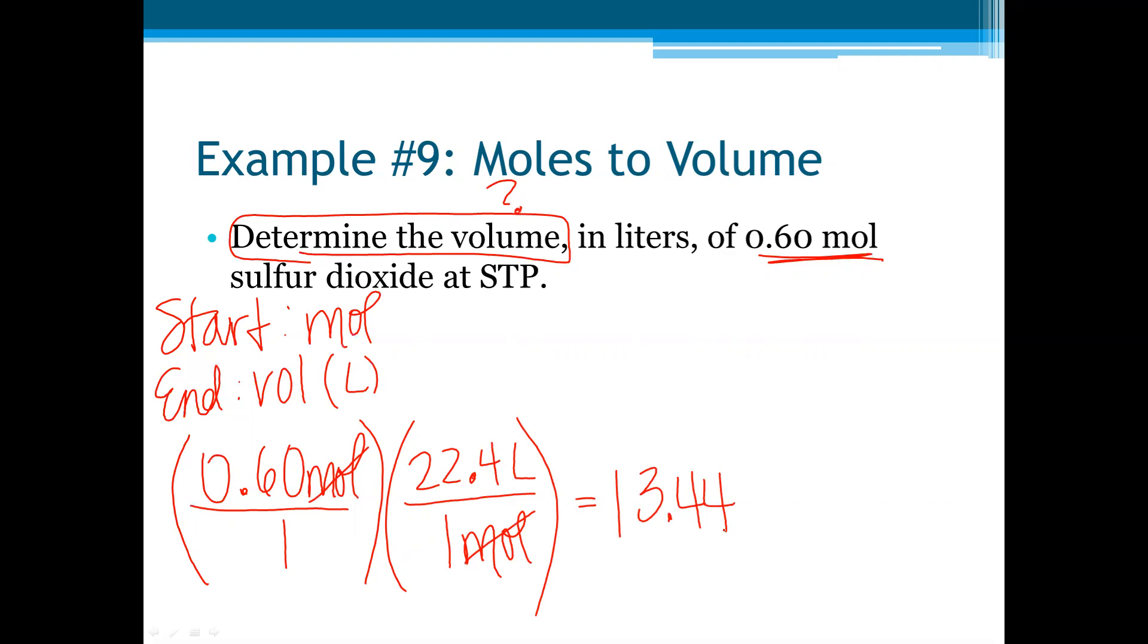Now to round it, we need to look back at our original number here and that is going to be two significant figures. The zero at the beginning does not count because it's at the beginning of the number on the left side and there's not a non-zero digit before it, so it doesn't count. But the zero at the end does count because it's after the six and it's after the decimal.